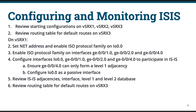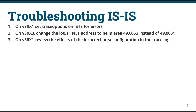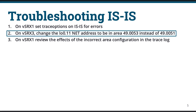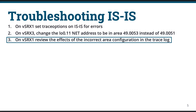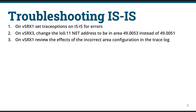Then we'll move on to the troubleshooting of ISIS. First, we'll configure trace options to get some detailed log messages about the errors we'll be creating. The error we'll configure is to have mismatched area configuration between level 1 neighbors, where Vsrx3's VR11 instance was previously in area 51 — we'll reconfigure this to be in area 53. Once committed, we'll take a look at the trace options log file to see the error log messages that are generated. Let's jump on into the devices and get started.